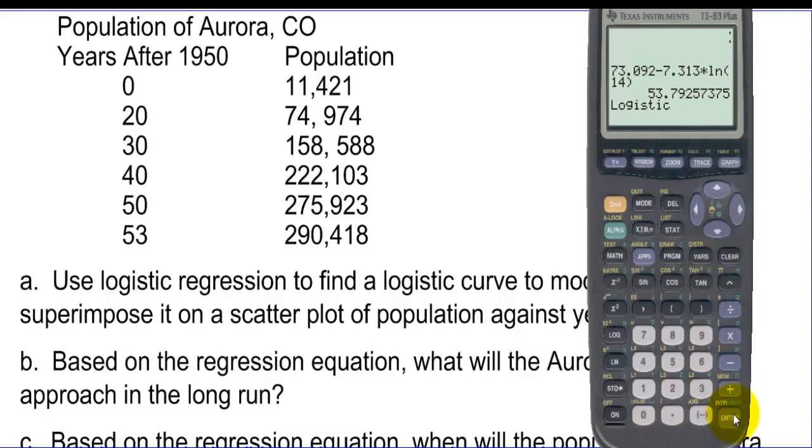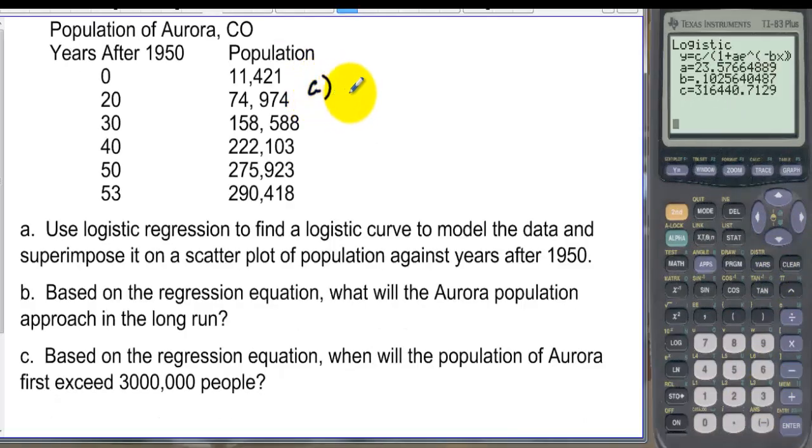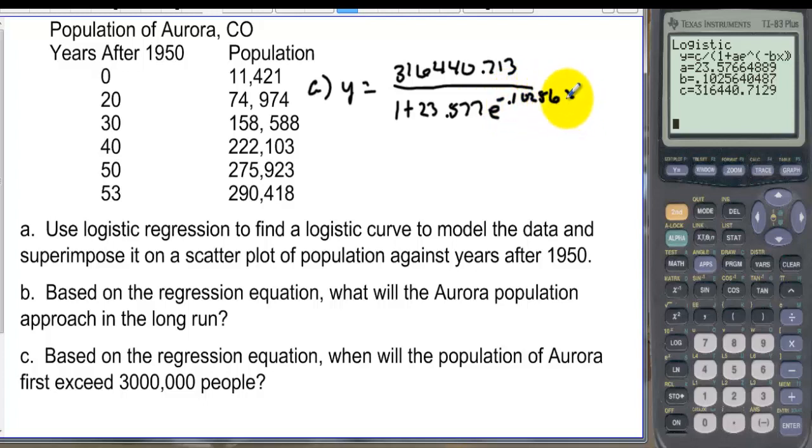And it should give us the equation. So for letter A we have Y equals 316,440.713 divided by 1 plus we have the A which is 23.577. And then E to the negative 0.10256X.